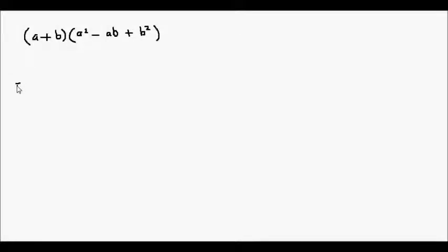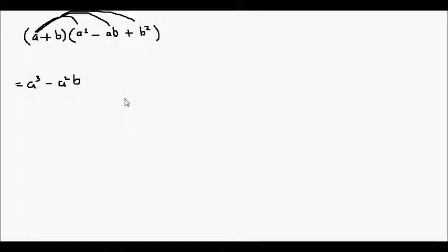Let's multiply this out to see what we get. a times a squared will give me a cubed. a times negative ab will give me minus a squared b. And a times b squared will give me positive ab squared. b times a squared will give me positive a squared b.